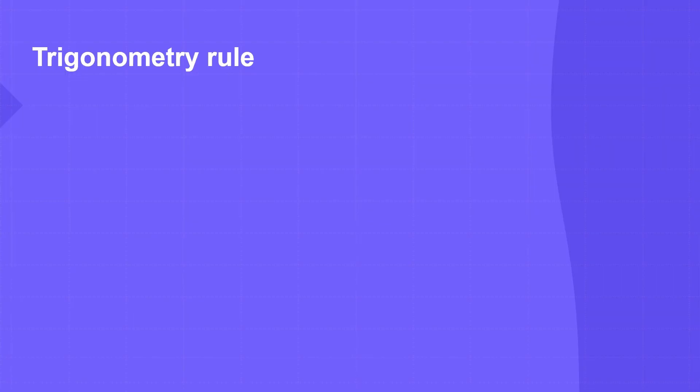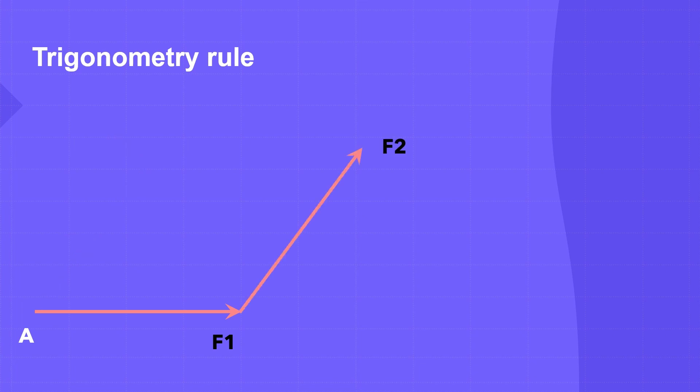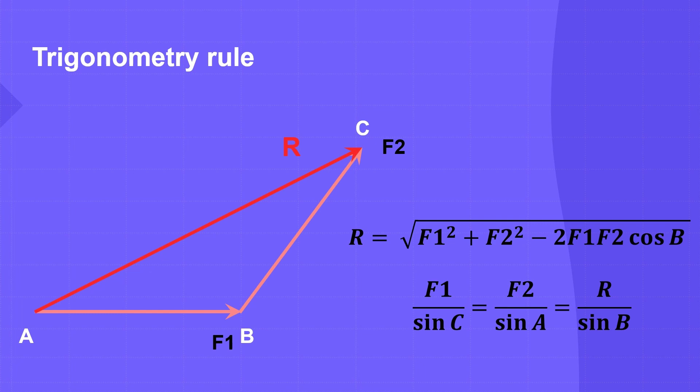All problems here are solved using the parallelogram and trigonometry rules. If we have two forces F1 and F2 represented by two arrows acting on point A, force F2 can be moved so its start coincides with the end of F1. Consequently, the resultant force R is represented by an arrow starting from point A and ending at the end of F2, forming triangle ABC. The following equations can be used to find the magnitude and direction of the resultant force R.